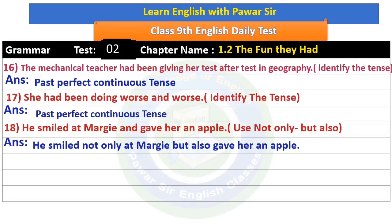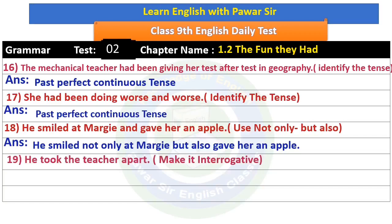Another answer option: 'He smiled not only at Margie but also gave her an apple.' Next: 'He took the teacher apart.' Make it an interrogative sentence. This is simple past tense, so the yes/no type question is: 'Did he take the teacher apart?'